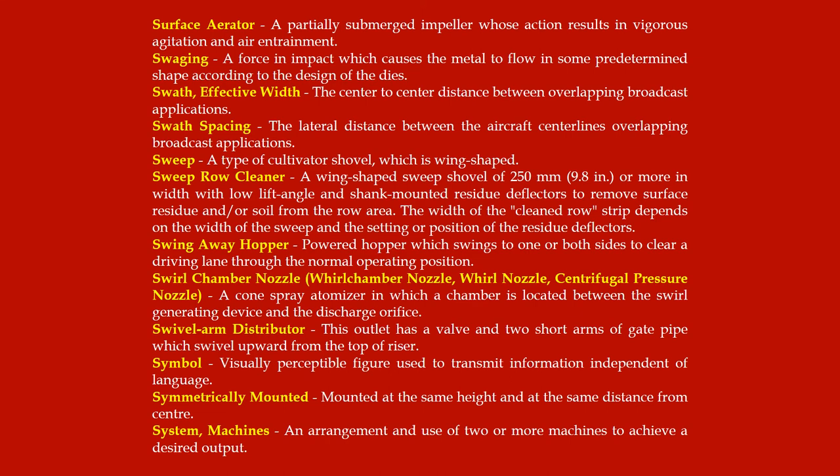Swagging: a force and impact which causes metal to flow in some predetermined shape according to the design of the dies. Swath effective width: the center-to-center distance between overlapping broadcast applications. Swath spacing: the lateral distance between aircraft center lines for overlapping broadcast applications.